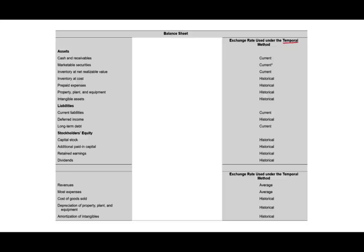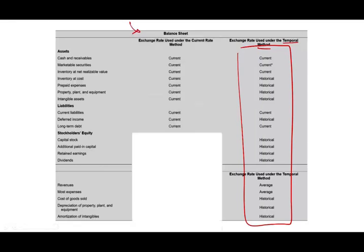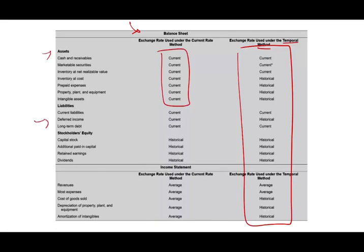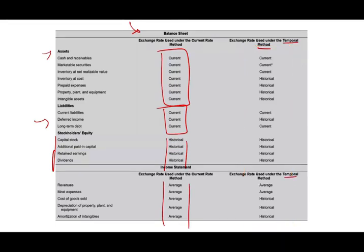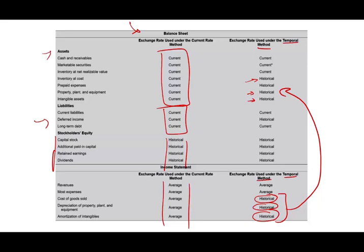Let's take a look at the big picture comparison. Under the current rate method: assets — everything translated at the current rate; liabilities — everything translated at the current rate; stockholders' equity — historical rate. Revenues and expenses — everything is the average rate. Notice that under the temporal method, certain expenses like cost of goods sold, depreciation, and amortization use the historical rate, because those related assets such as property, plant and equipment and intangibles are reported at historical. The current rate method is easier — you use the average for the income statement and the current rate for balance sheet assets and liabilities, with stockholders' equity at historical.